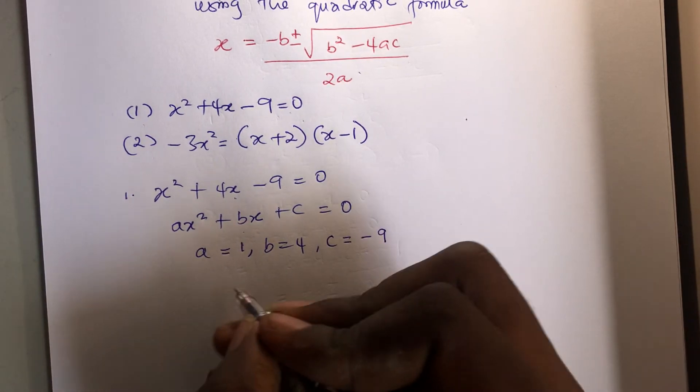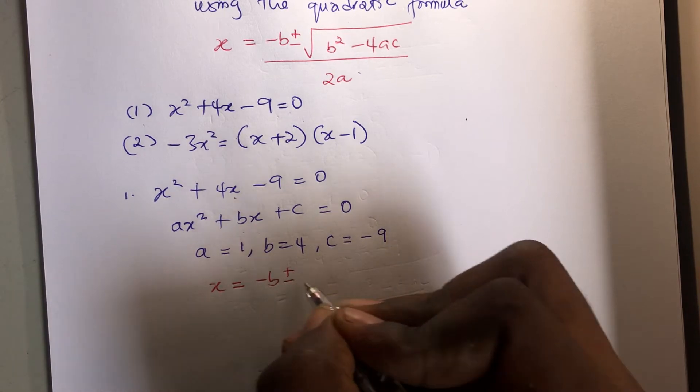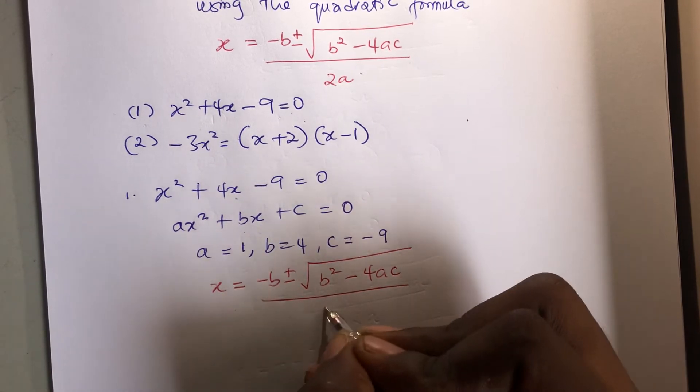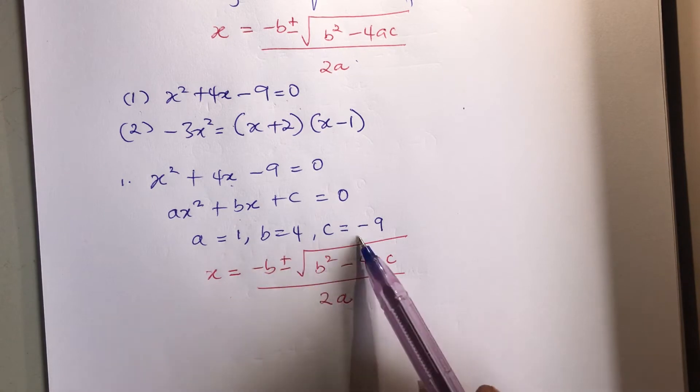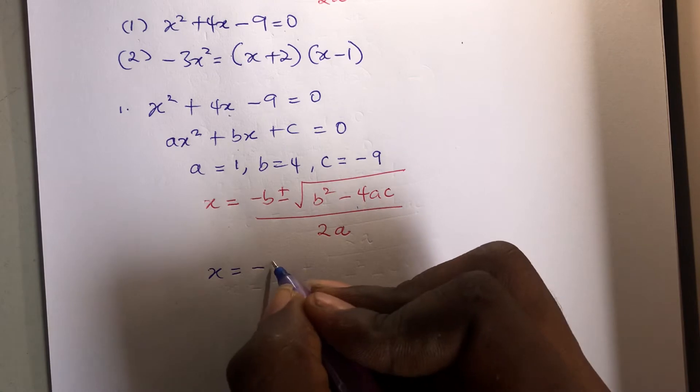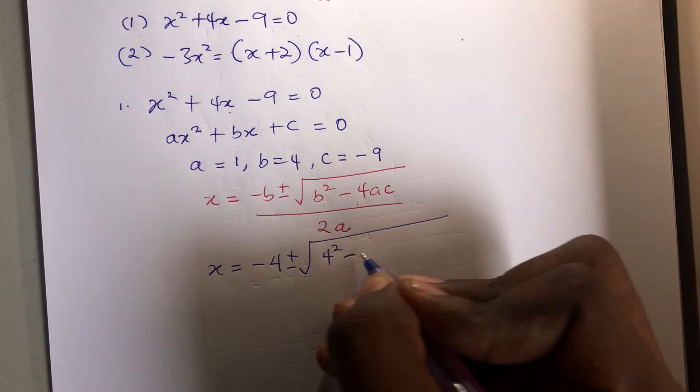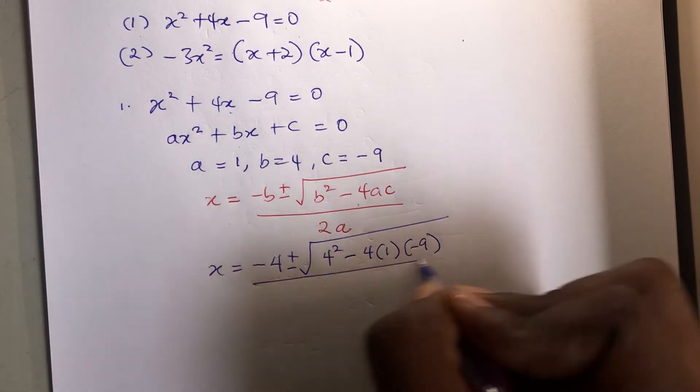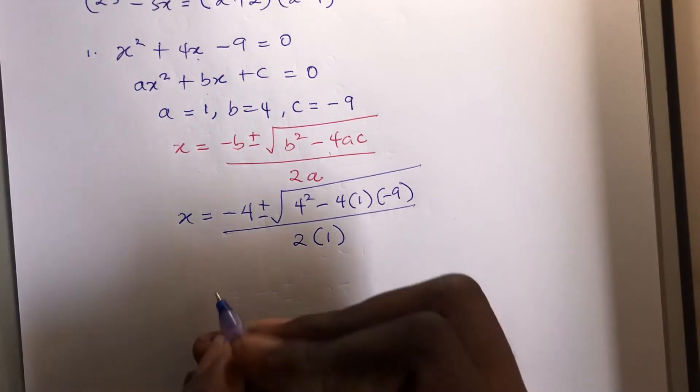Then we write our formula: x equals to minus b plus minus the square root of b squared minus 4ac all over 2a. So we simply put the values into this equation. So x equals to minus 4 plus minus, b squared is 4 squared, 4a is 1 and c is minus 9, 2a is 1 here.